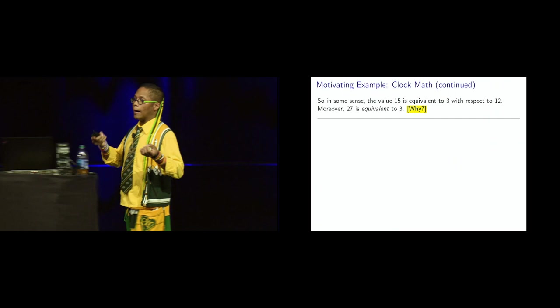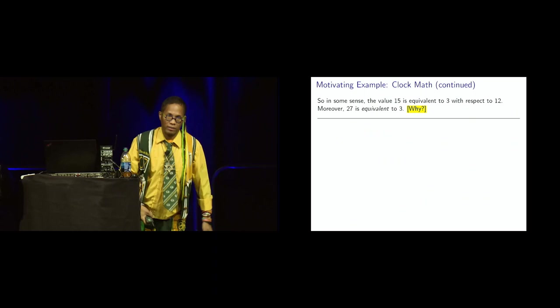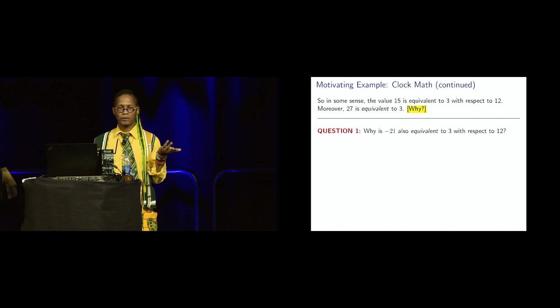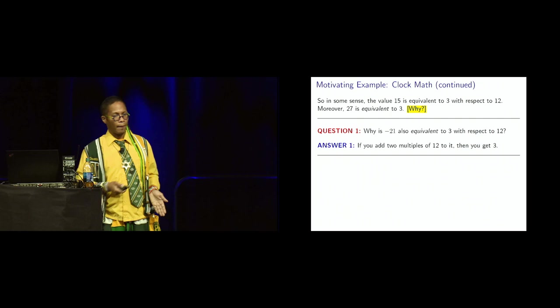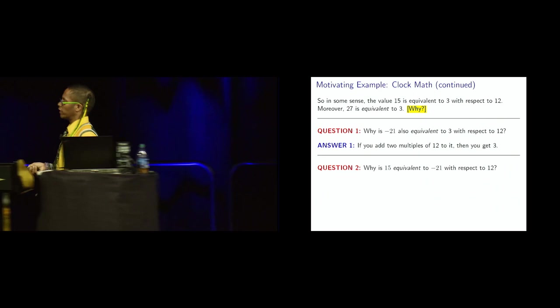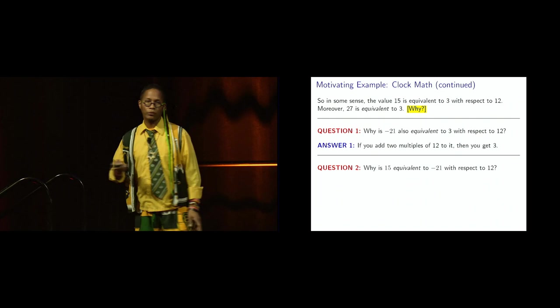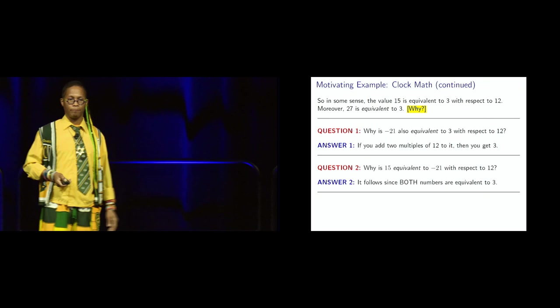Moreover, 27 is equivalent to 3 with respect to 12 also. Well, why? Because 27 is 12 more hours past 15. And also we can go negative. Negative 21 is equivalent to 3 with respect to 12 because I can add two multiples of 12, namely the number 24, to get 3. And also, why is 15 equivalent to negative 21? Well, we already did the previous two problems. If I know they're both, if they're both equivalent to 3, then they're both must be equivalent to each other. So we're learning some sort of properties that in this relation that I'm going to make clear.